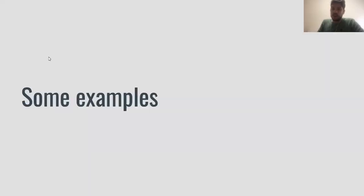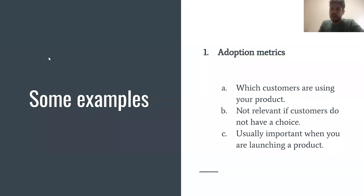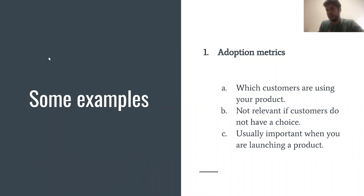Finally, some examples. I don't want this to become a definitive list of metrics for a platform, but these are examples that have worked for me. The first is adoption metrics. When you're building a platform product, you want your customers to adopt it. Adoption metrics are really good in the beginning — making sure everybody uses it, tracking which customers are using your product. This is important especially when launching. However, if your customers are forced to use your product, adoption metrics won't be as useful in those cases.